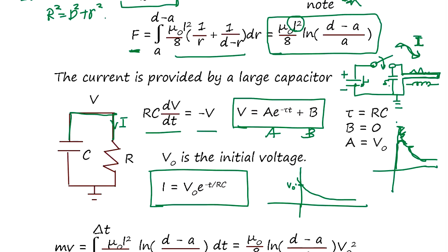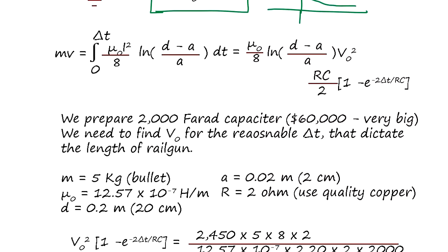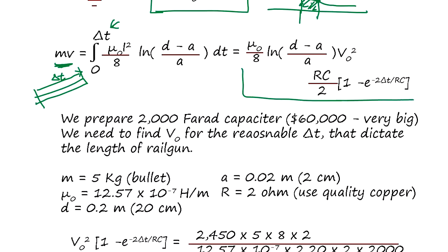You can't maintain constant voltage at this large voltage and high current level, so it's inevitable that we utilize the decaying portion to propel the bullet. The impulse equation MV equals the integral of force over delta-t, where delta-t is the time the bullet stays on the rail from start to ejection. Assuming a 2000-farad capacitor, we need to find V0 for a reasonable delta-t, which determines the barrel length.